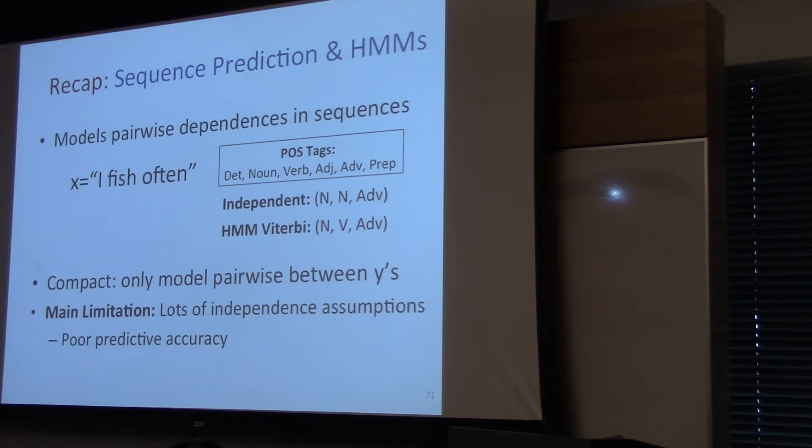Okay, so just to recap, we looked at sequence prediction, sequence modeling, and hidden Markov models. Models all pairwise, models pairwise dependencies in sequences. It's compact because it only models pairwise dependencies. It only models them in the tag space, which is much smaller than the word space. So that's a quadratic dependency on the number of tags, linear dependency on the number of words in the vocabulary.